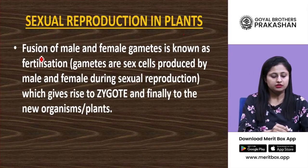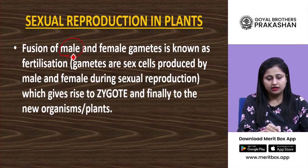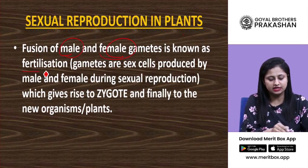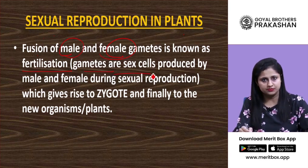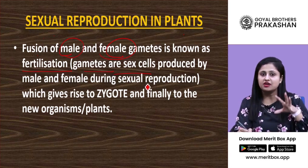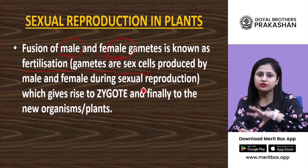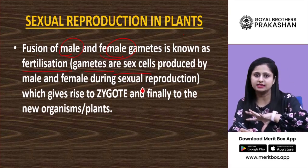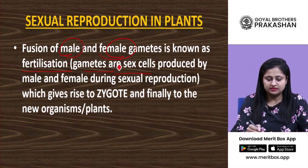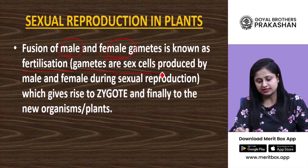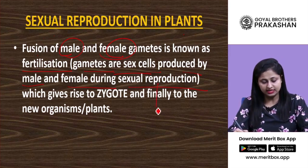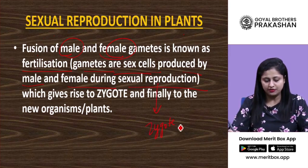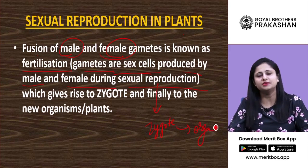Sexual reproduction in plants. Fusion of male and female gametes is known as fertilization — this is when the gametes are fused. Both types of gametes, male and female sex cells, are fused. Gametes are the sex cells produced by male and female during sexual reproduction, and fertilization gives rise to a zygote and finally to a new organism or plant.